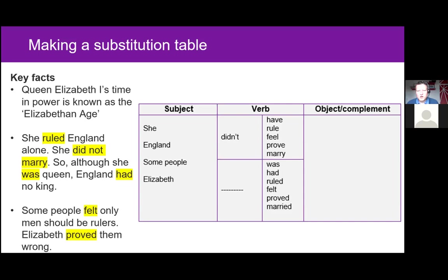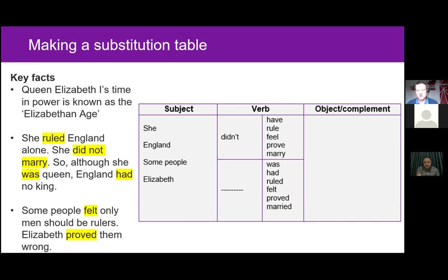You'll also notice that because of the level of the students, we've provided all the verbs and their forms that go with 'didn't' at the top, and all the verb forms that go with the positive sentence at the bottom. This allows the learner to write 'didn't have,' 'didn't rule,' or simply 'had' or 'ruled.' It means they can't make common mistakes like 'didn't ruled' or 'didn't felt' — the double inflection, which is quite common when learners use the past simple with the auxiliary 'didn't.'